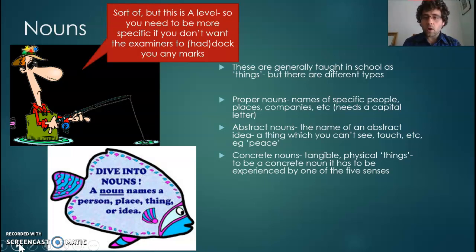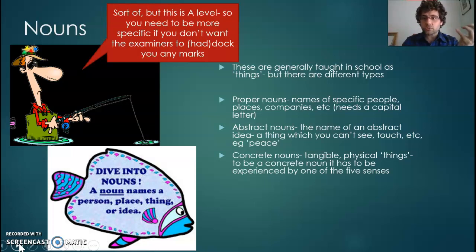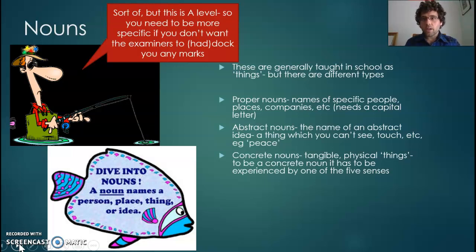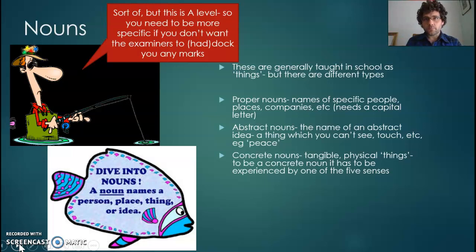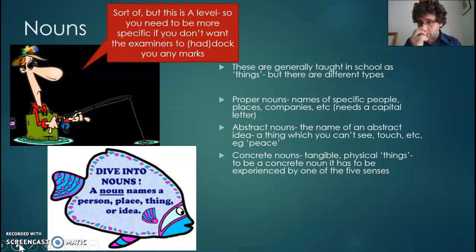Abstract nouns are a little bit harder to explain. They are concepts, they are ideas. They are still things — not actions or descriptions — but they are not something you could see, taste, touch, smell, or hear. So for example, peace, happiness, or emotion — they're all things but not physical things. Any word that ends in -TION will almost certainly be an abstract noun. Think about emotion, motion, nation — all of those are concepts.